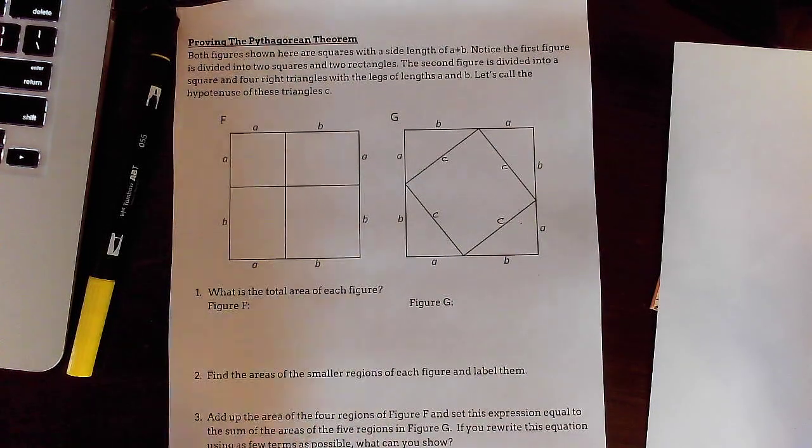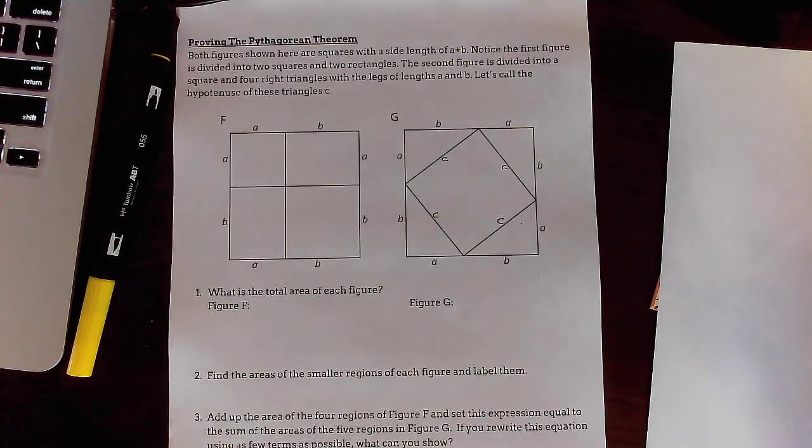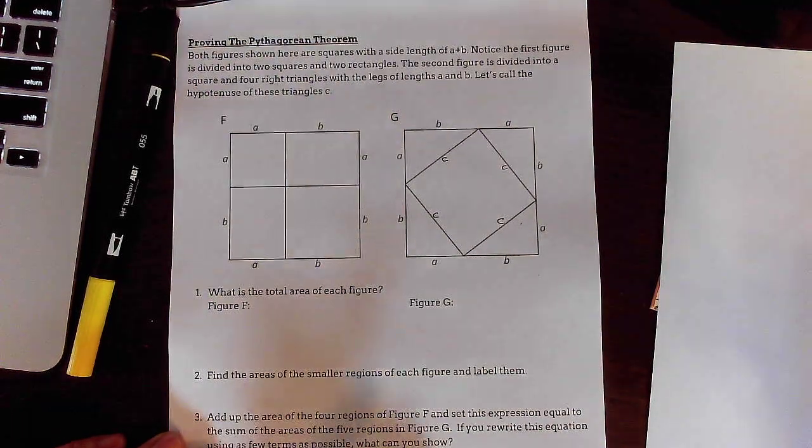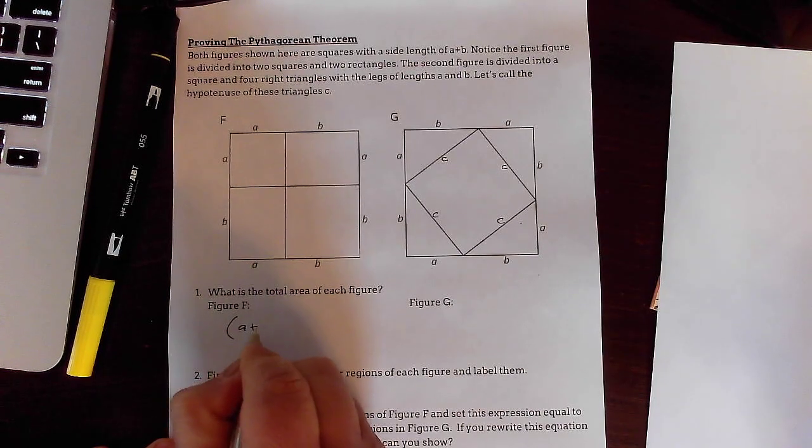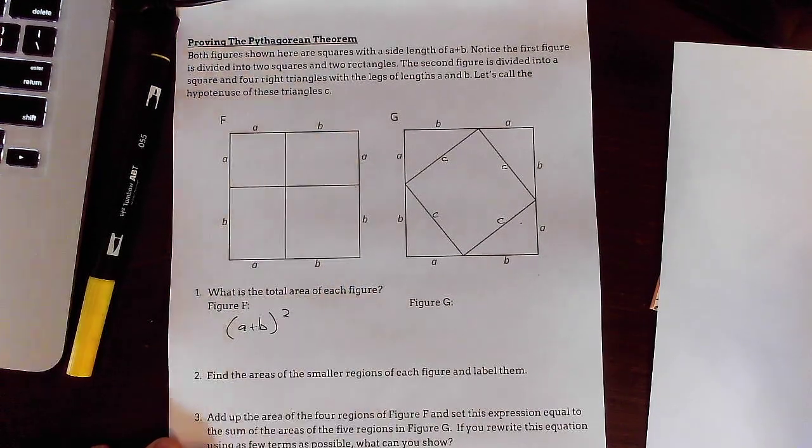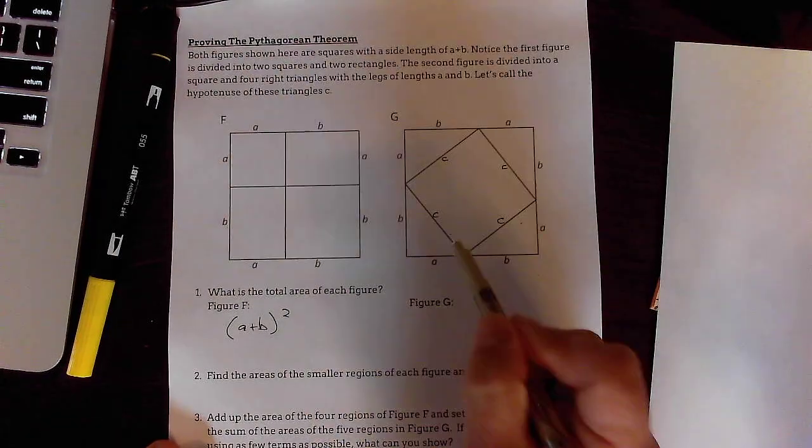What is, number one, what is the total area of each figure? Figure F, figure F is a square. Come on now, people. That's just A plus B squared. Same thing with G.